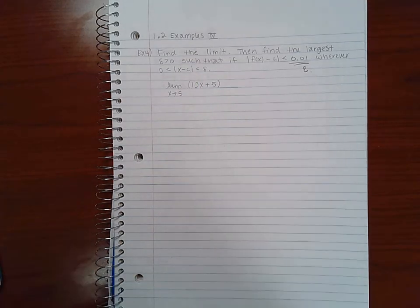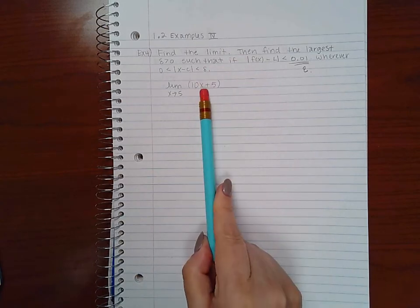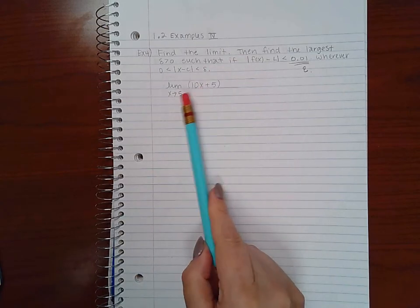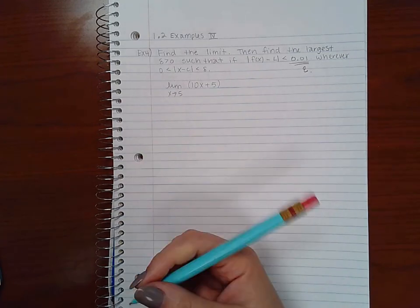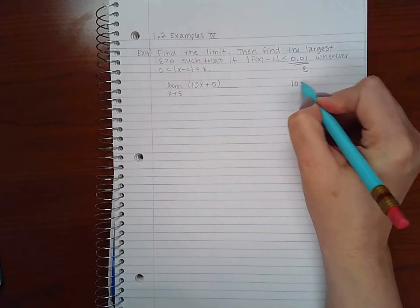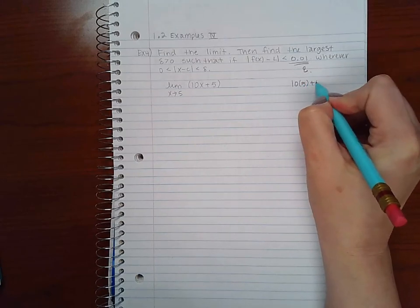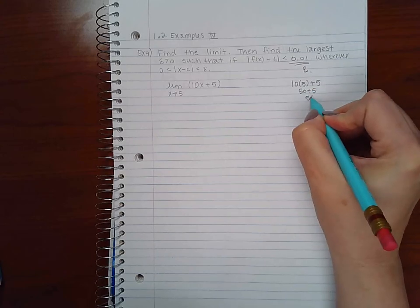There's nothing funny going on with this, so I can find the limit just by direct substitution. If I direct substitute 5 in for x, I end up with 50 plus 5 which is 55.